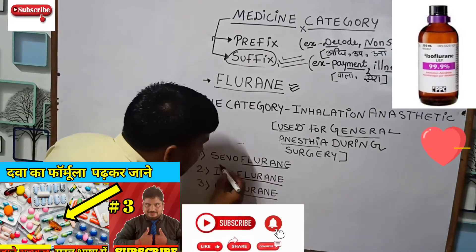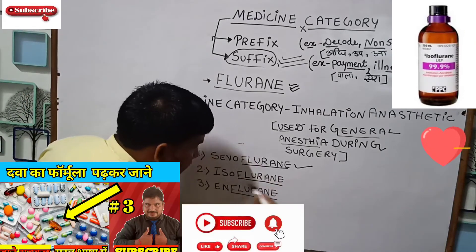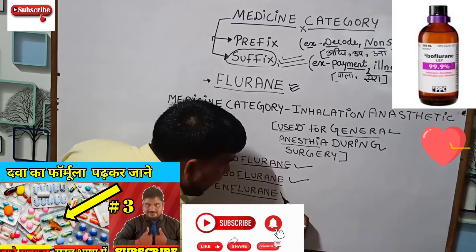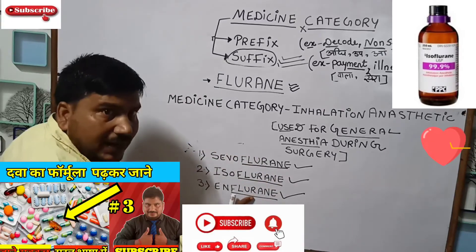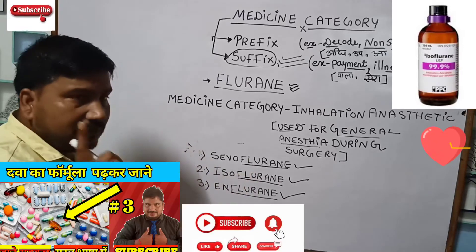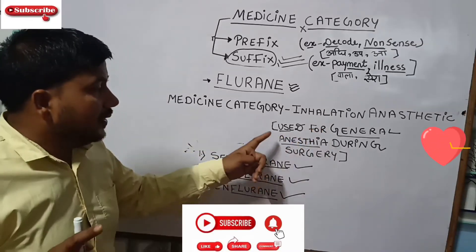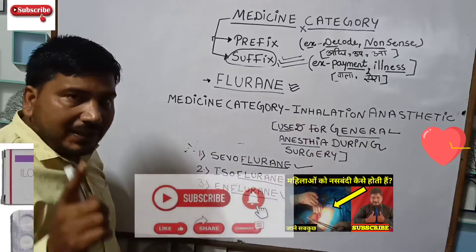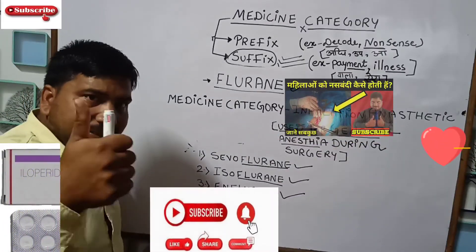Friends, Saboflurane, Esoflurane, and Flurane — these are types of Flurane used for general anesthesia during surgery. Okay friends, let's go to the next content.